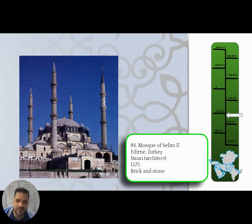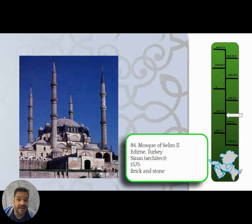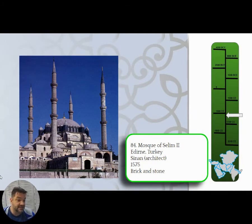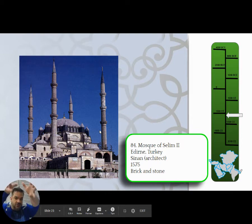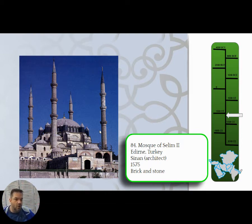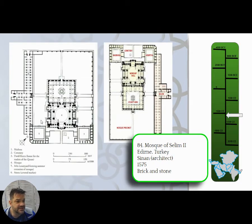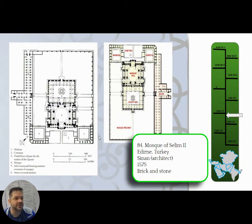Sinan outlasts Suleiman the Magnificent and serves as chief architect under his son Selim II. The piece on our list is the Mosque of Selim II. You can clearly see the influence of Hagia Sophia, but it's much more vertical — the dome is more compact and taller than Hagia Sophia, which is more sprawling. The minarets are also brought in much tighter, incorporated into the design plan.